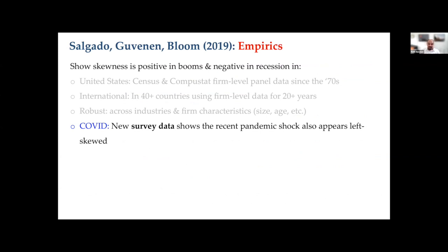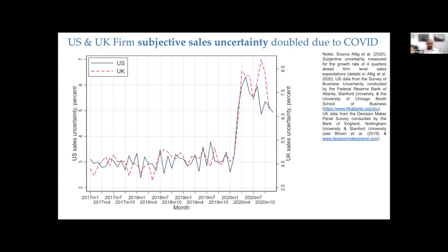I want to show you some very new survey evidence. My co-author Nick Bloom is involved in two surveys — one in the US and one in the UK — that ask firms about their expectations on a monthly basis and also collect data on actual sales and other performance measures. One striking figure is a measure of subjective uncertainty: it was very flat before COVID, and then there was a huge surge in uncertainty expectations — roughly a doubling — starting in the first couple of months of 2020.